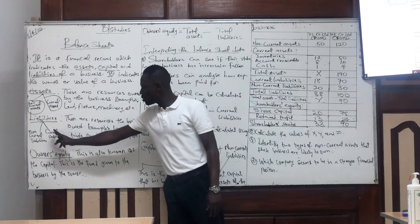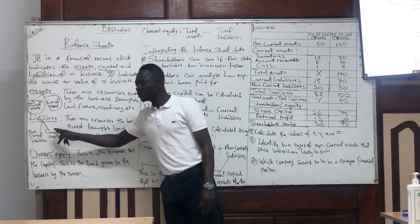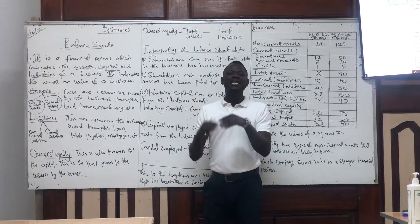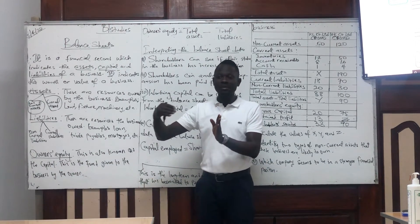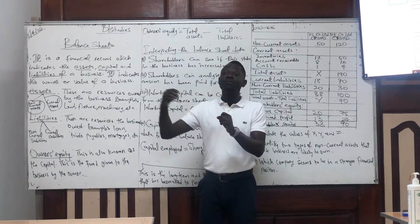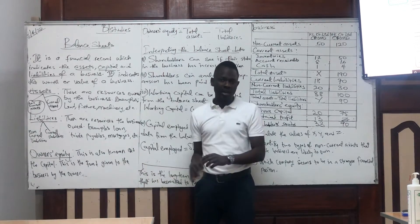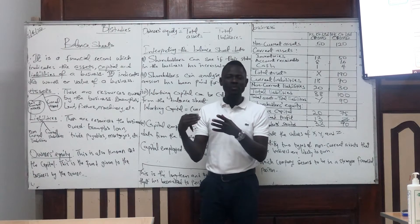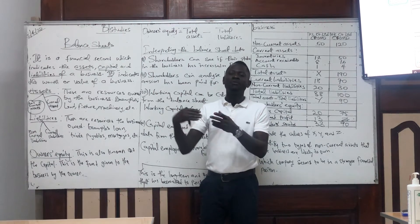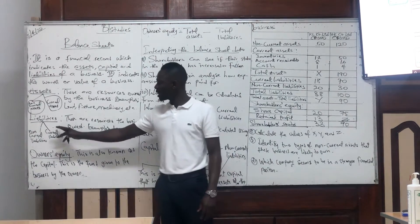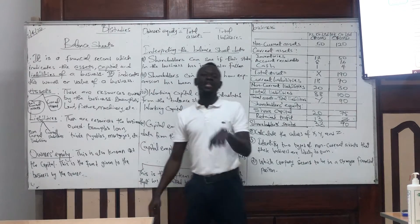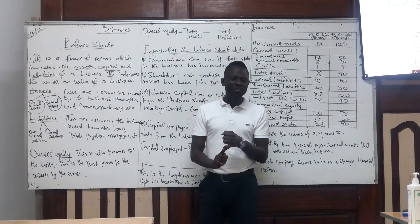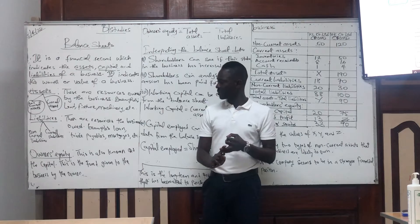Here we have non-current liabilities and current liabilities. For non-current liabilities, they can last more than a year — meaning the business can hold them for over a year — like a loan or a mortgage. Then we have current liabilities; these do not last more than a year, like trade payables or your bank overdraft.